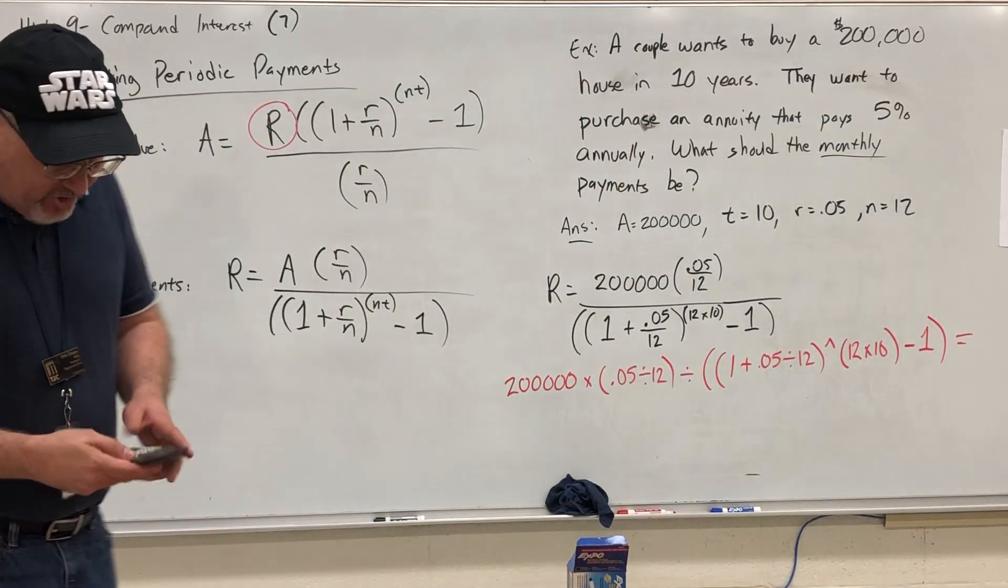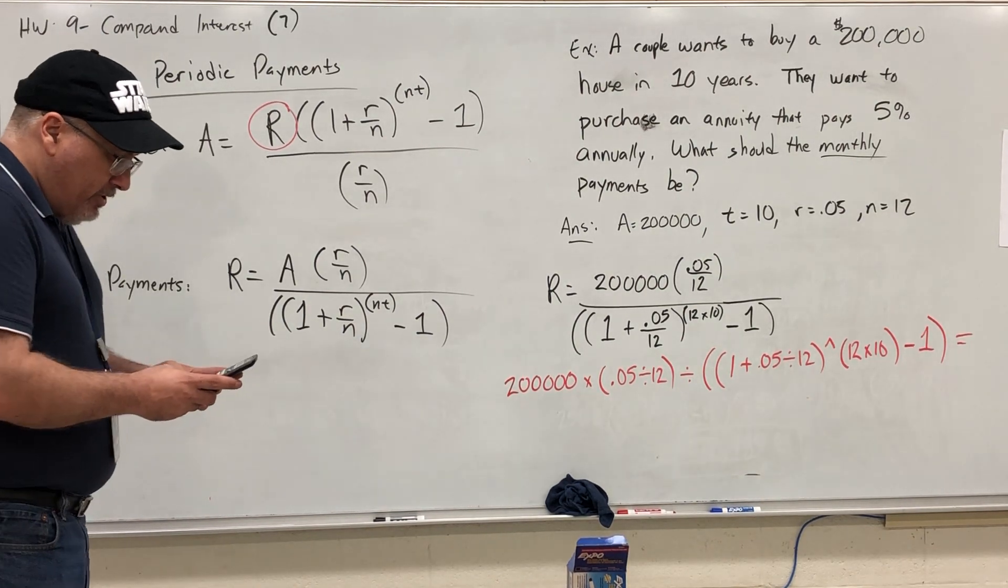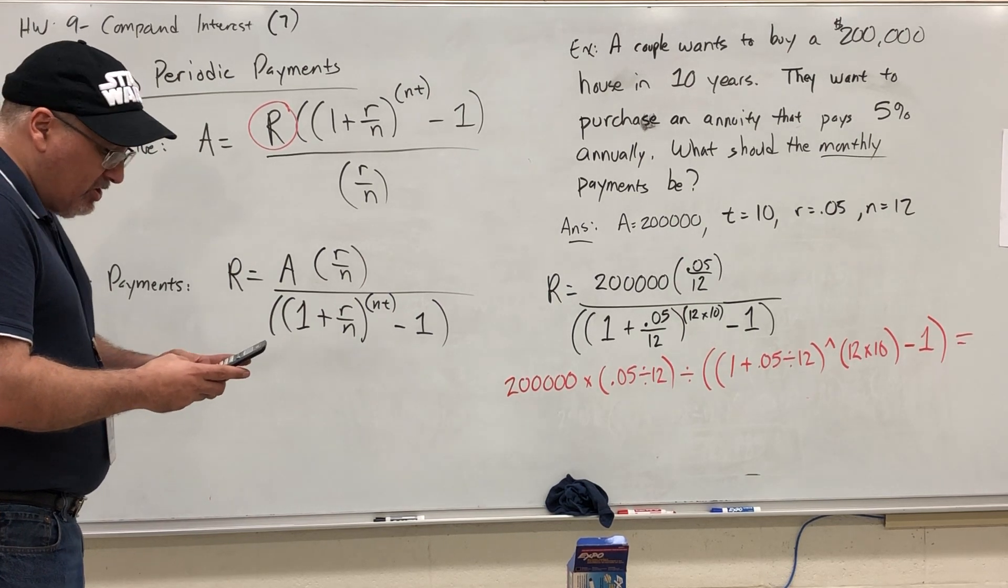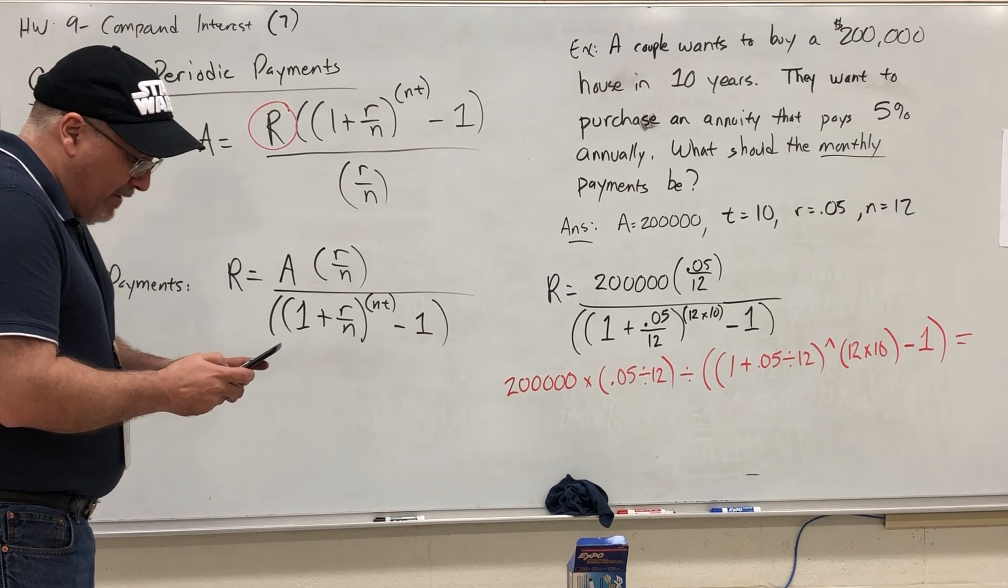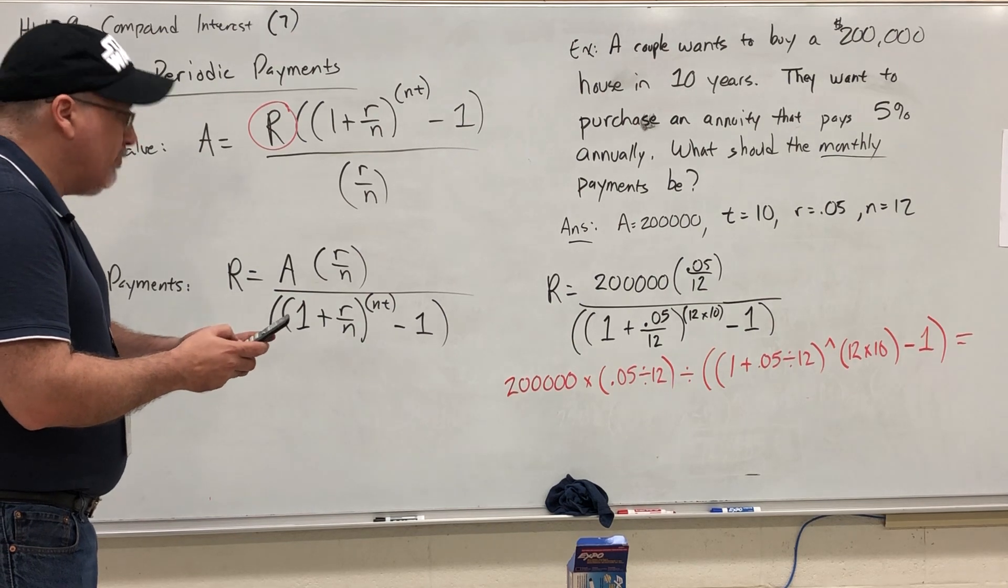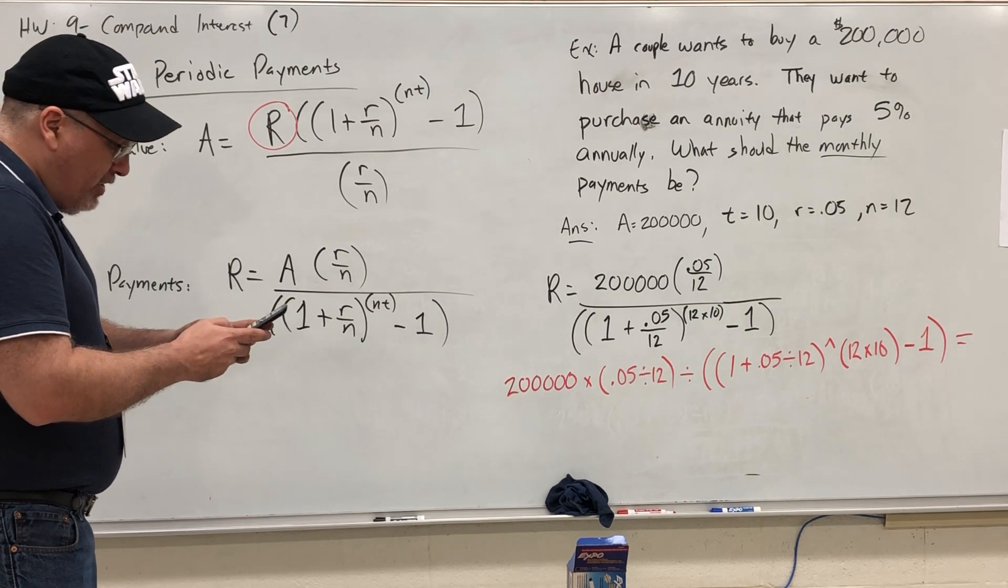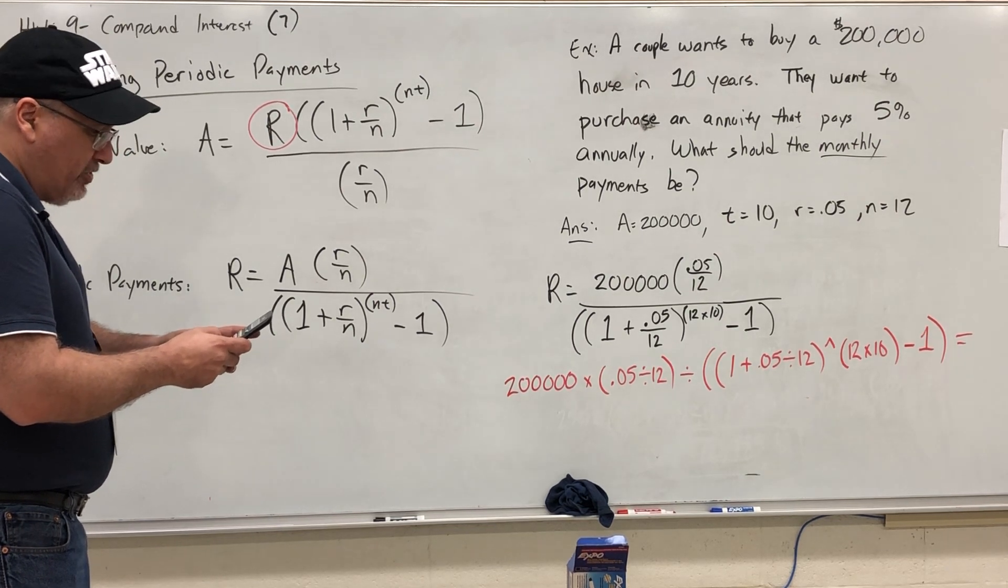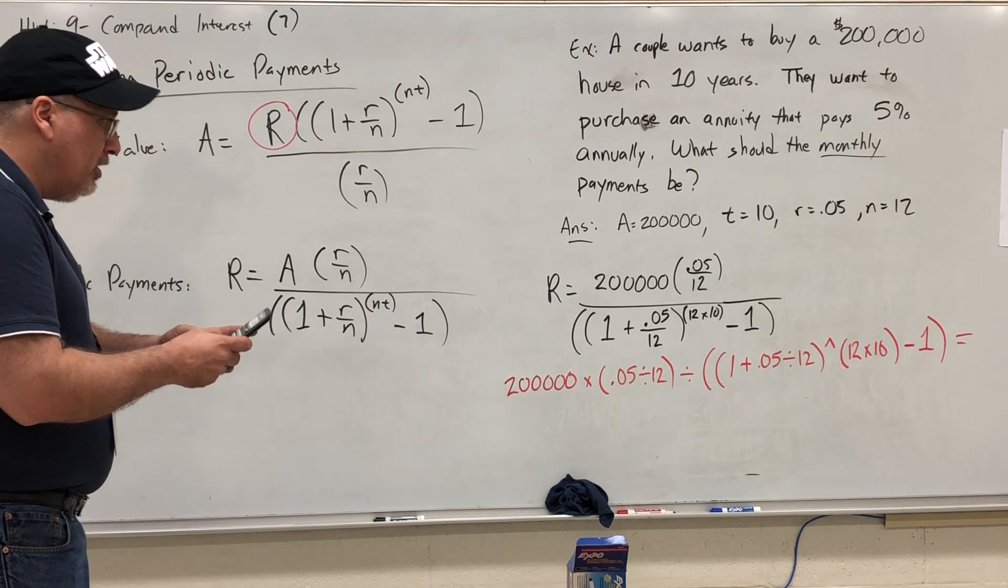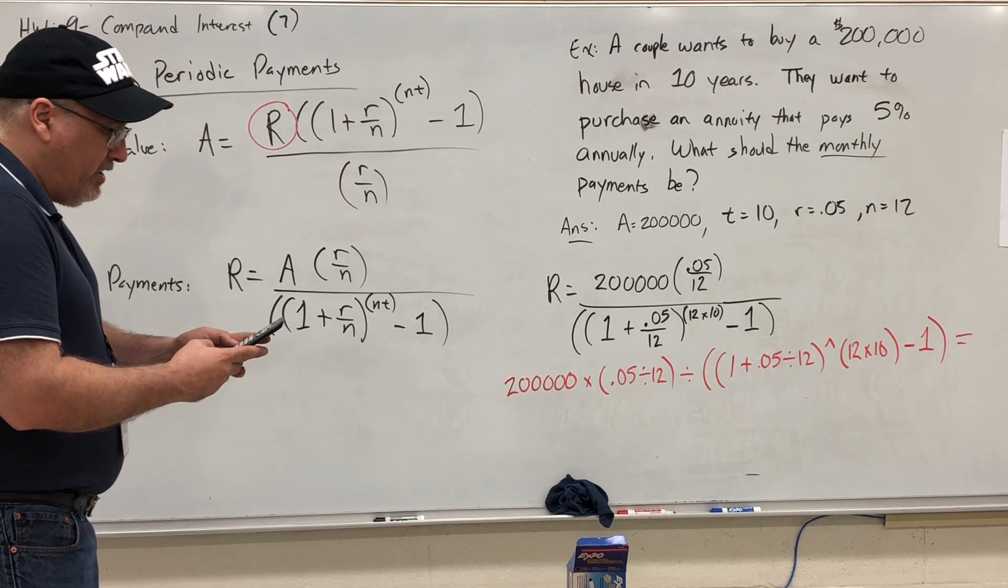All right, I invite you to put this in your calculator. You can pause the video if you'd like to do that. I will be doing it now. 200,000, times, open parenthesis, 0.05 divided by 12, close parenthesis, divided by, double open parenthesis, 1 plus 0.05 divided by 12, close parenthesis, exponent, open parenthesis, 12 times 10, close parenthesis, minus one, close parenthesis again. Equals.